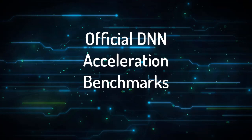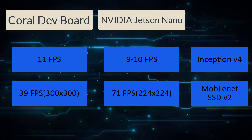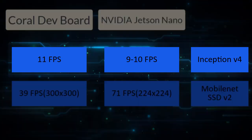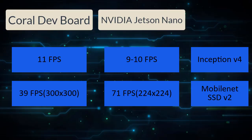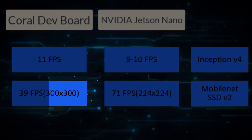But that's not how most people are going to use these boards. Looking at performance, here is a table of official benchmarking results from NVIDIA and Google. The first benchmark is on Inception version 4, a convolutional neural network used for image recognition. NVIDIA Jetson Nano manages 11 frames per second, and Google Coral Dev Board achieves around 9 to 10 frames per second. However, it's very difficult to make a fair comparison using official benchmarks because they use different neural networks and different input layer sizes, which also affects performance.